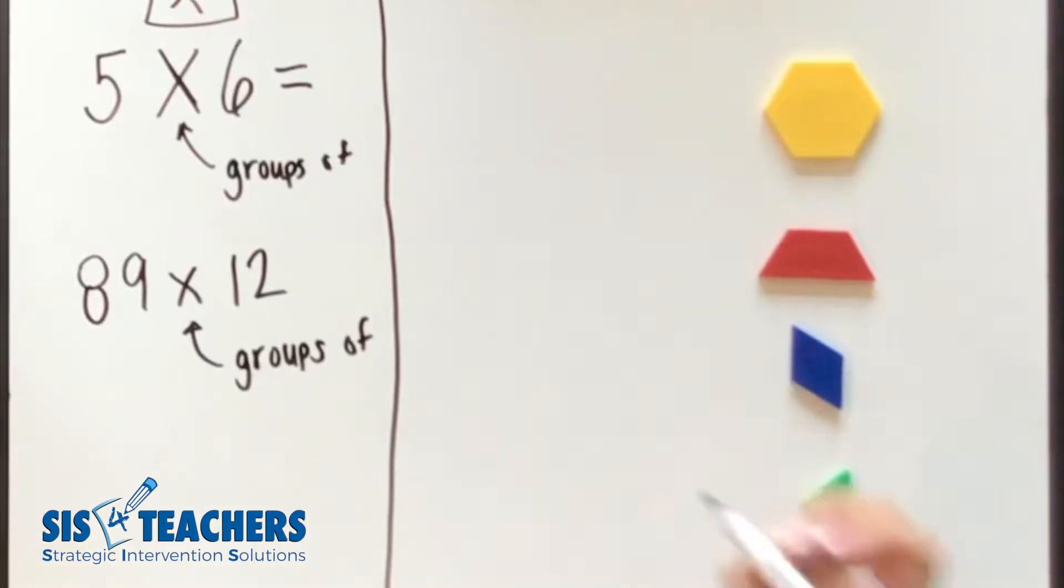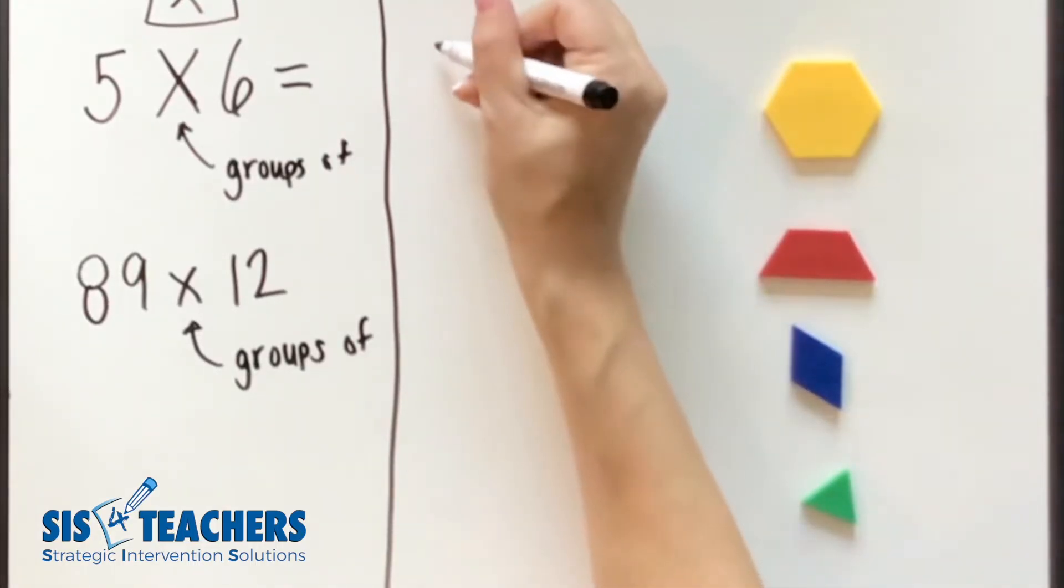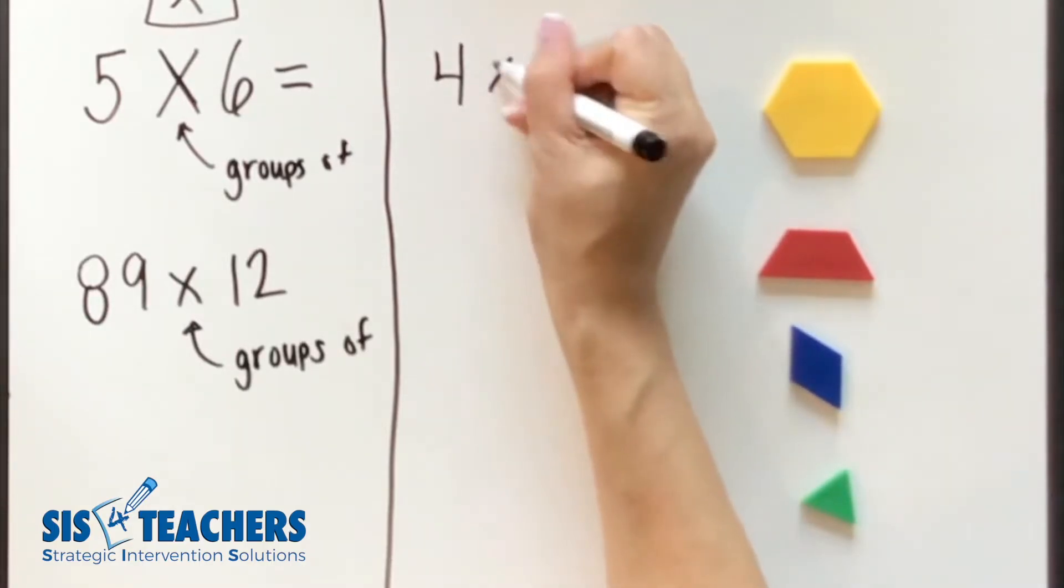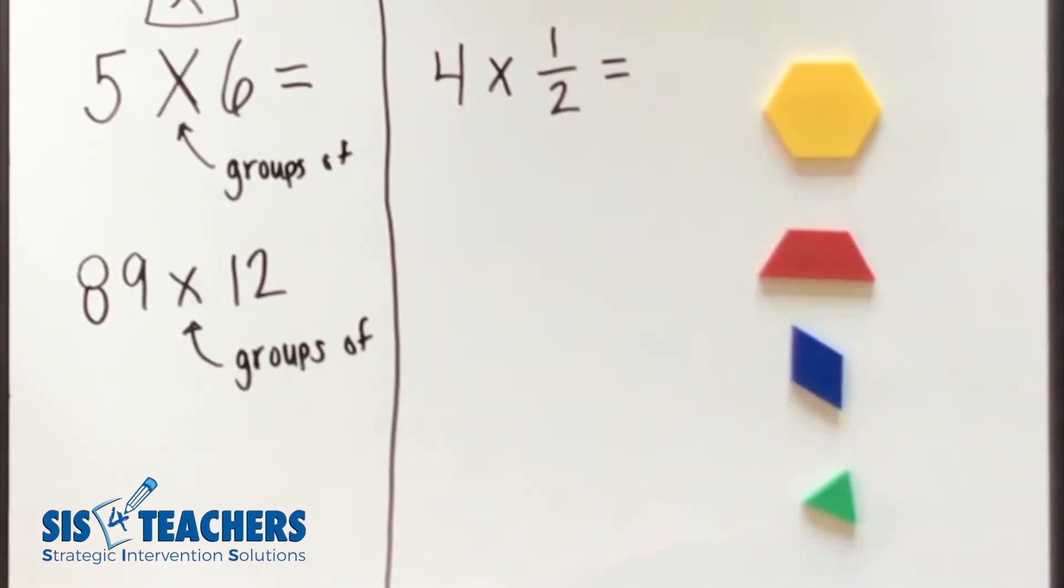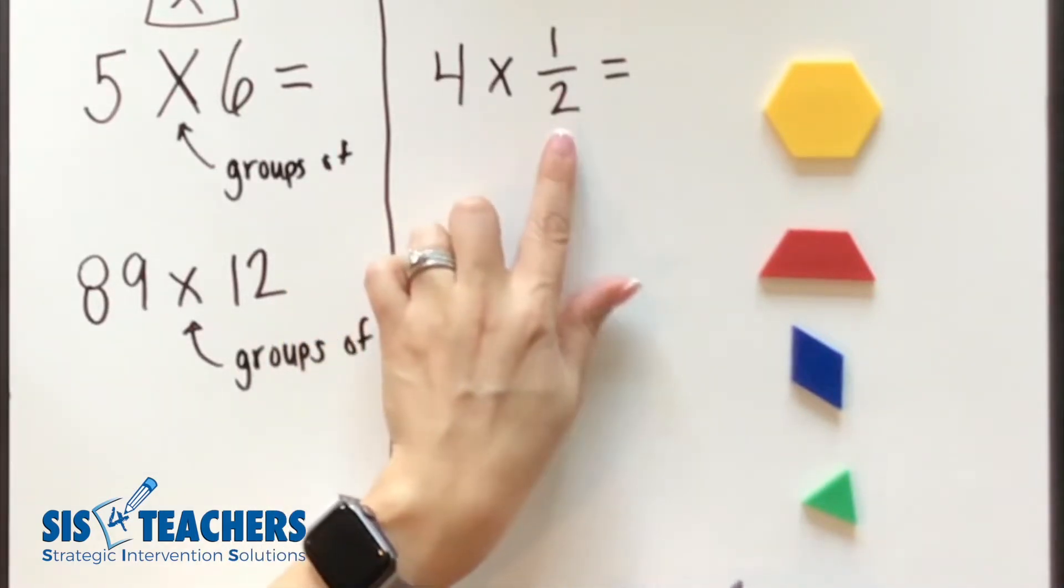Let's first take it with a whole number. If I were to put a fraction statement up here where I might put 4 times 1/2, what does 4 times 1/2 mean? It means four groups of half or four halves.